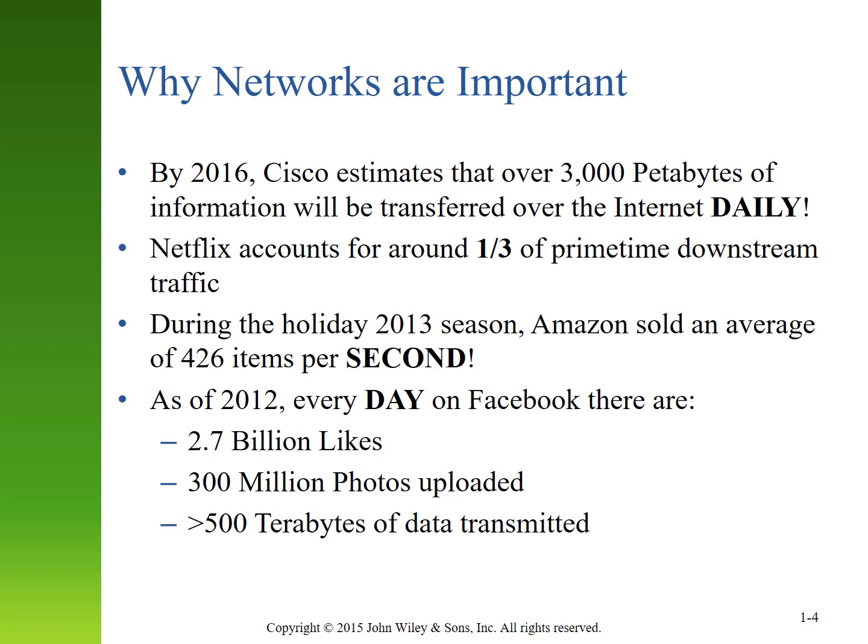Back in 2016, Cisco estimated that more than 3,000 petabytes of information were transferred over the internet every single day. Around the same time period, Netflix accounted for around a third of the prime time downstream traffic. Back in 2013, Amazon sold an average of 426 items every second during their holiday season, and you can imagine what that might be in 2020 or 2021.